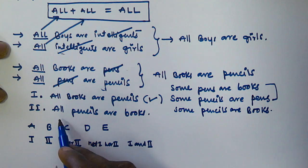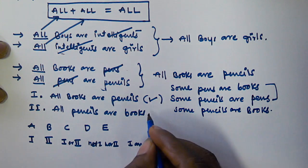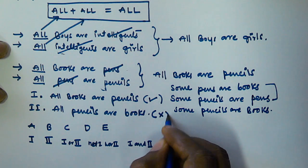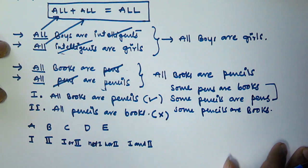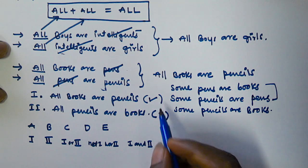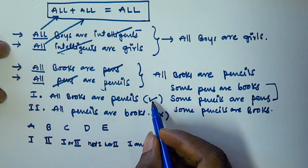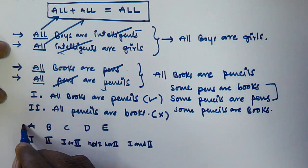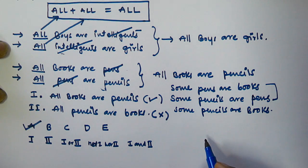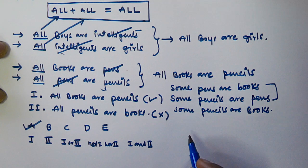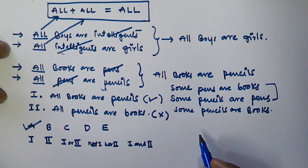But the given conclusion 2 is all pencils are books, whereas we derived only some pencils are books. So conclusion 2 is not true. Therefore the answer is A — only conclusion 1 is true. Thank you for watching. In the next video we will see more problems based on how to solve all rules. Please subscribe to my channel.